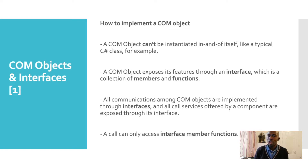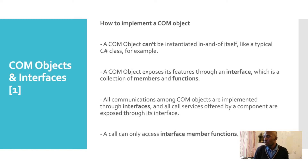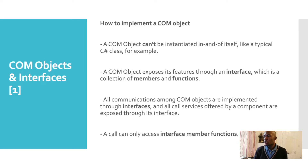A COM object exposes its features through an interface, and we're going to be diving into interfaces quite a bit in this course as this is a fundamental component of learning about COM. An interface is a collection of members and functions. All communications among COM objects are implemented through interfaces and all core services offered by components are exposed through its interface. A caller can only access interface member functions — only member functions associated with an interface are the methods that can be called.